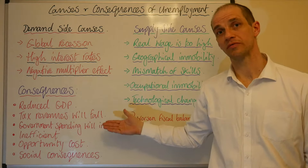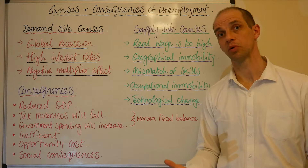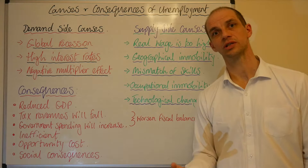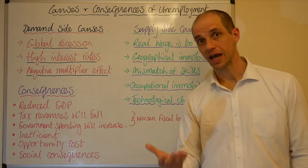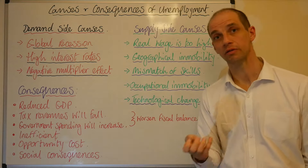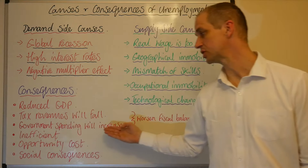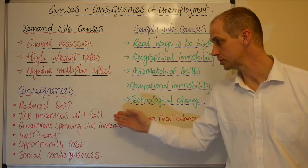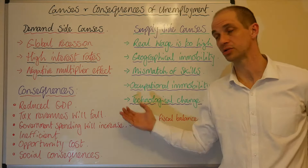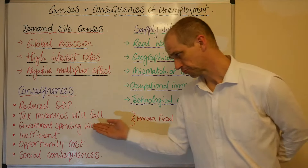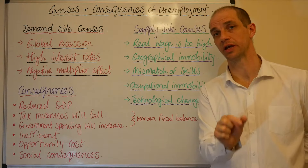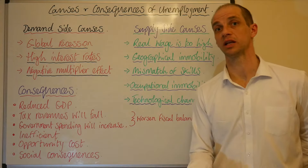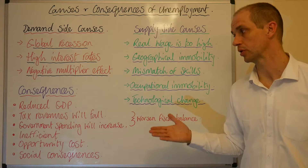Meanwhile, for the government, tax revenues will fall because fewer workers are employed in job roles, so their tax take will decrease. For businesses, they might be less profitable, meaning corporation tax taken also falls. At the same time, government spending is likely to increase — these refer to the so-called fiscal or automatic stabilisers that we'll look at later in the course. Transfer payments to those made unemployed will mean government spending has to go up as a direct result of increased unemployment.